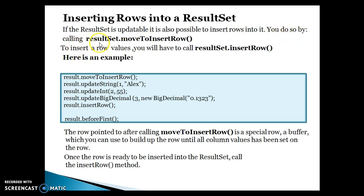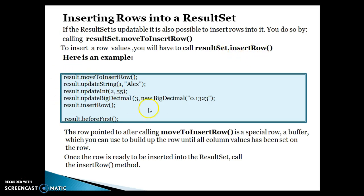To insert a row, you do so by calling resultSet.moveToInsertRow(). If you have a ResultSet object then you can call a method called moveToInsertRow(). First of all, to insert row values you will have to call resultSet.updateXxx() to set the values for all columns, and then finally you need to call insertRow() on the ResultSet.